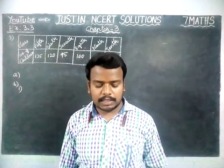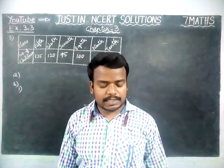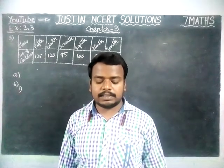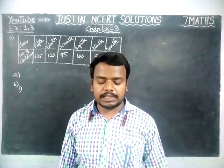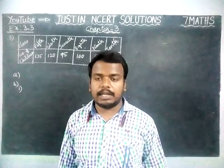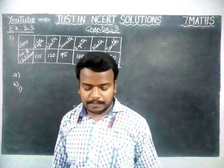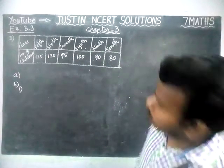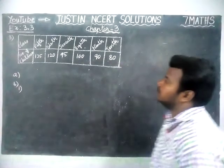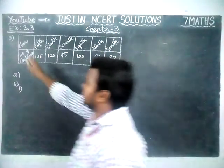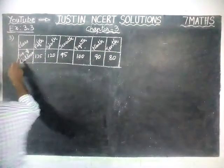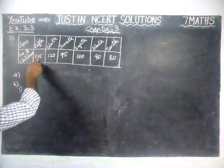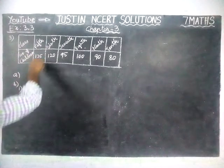The question is: number of children in 6 different classes are given below — represent the data on a bar graph. In class, the number of children are: 5th — 135 children.